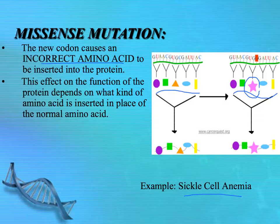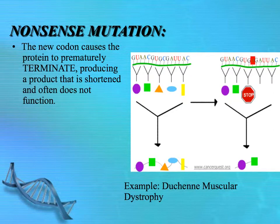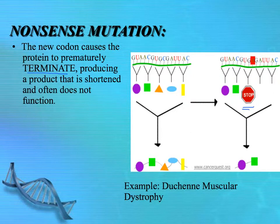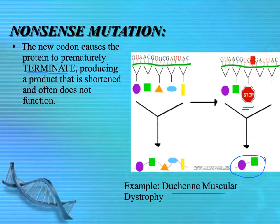If the protein replacement is something more similar to the original, you may not have such a drastic change in function. In a nonsense mutation, you have a termination of the protein because certain codon combinations signal it's time to stop making the protein, and if that stop codon shows up too soon, you end up with a truncated protein that does not have enough amino acids. One cause of Duchenne muscular dystrophy is a nonsense mutation causing a stop codon to appear too soon, making the protein non-functional because it's not big enough.